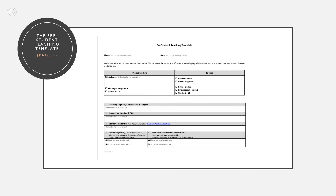If you're a 10-SPED student, you'll check either early childhood or cross-categorical, depending on the certification you're working towards. Then you'll check the age level of the lesson you'll be completing for the pre-student teaching. You will then fill in each part of the lesson plan on the template. The parts of the lesson plan will be described next.